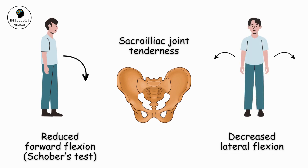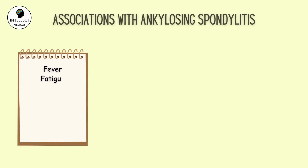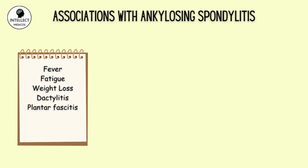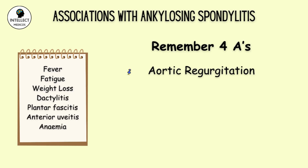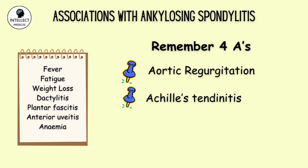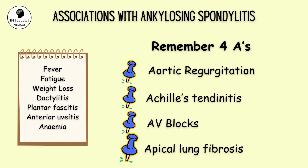There are many other associations but the important ones to remember are aortic regurgitation because of aortitis, Achilles tendonitis, AV blocks, and apical fibrosis in the lungs.